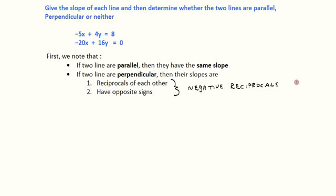And just remember, that just means that if one of the slopes is two-thirds, then the other slope would have to be the reciprocal, which is three-halves, and it would have to be at the opposite sign, so it would be negative. So these two slopes would indicate that these two lines would be perpendicular.